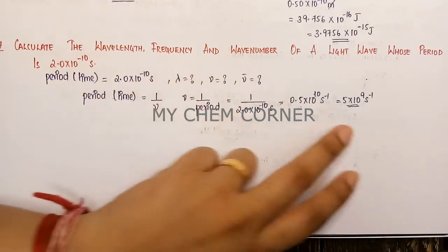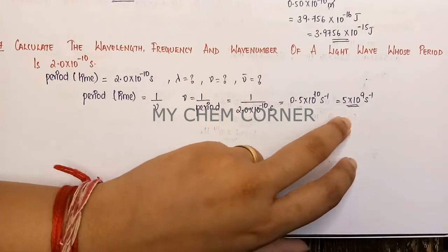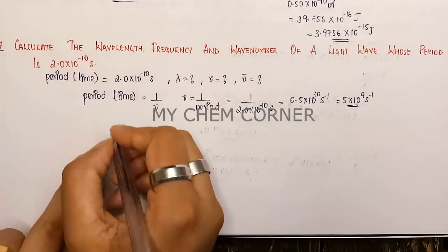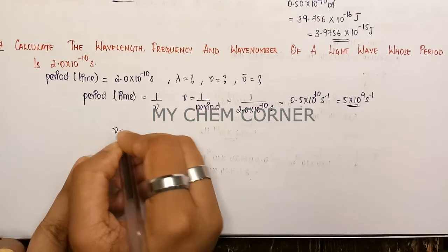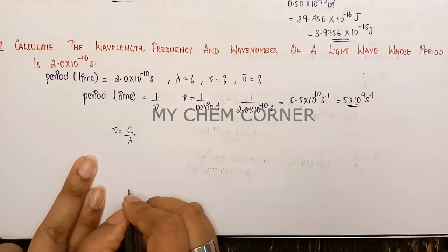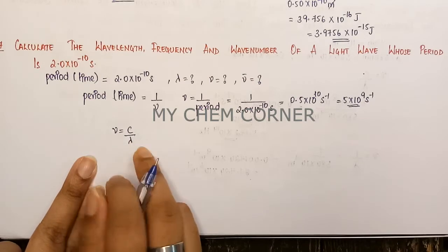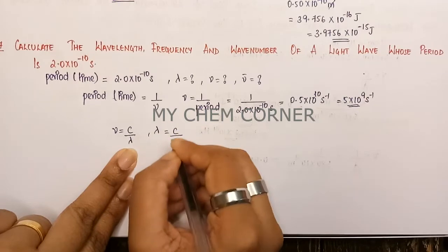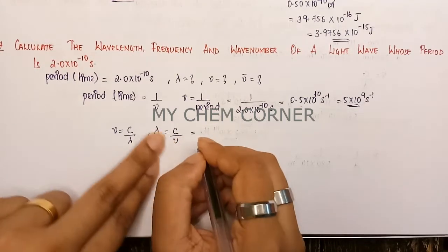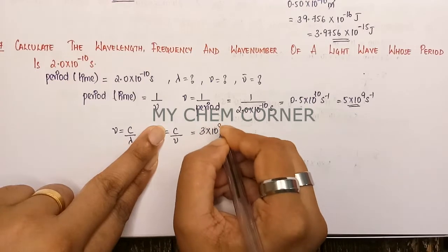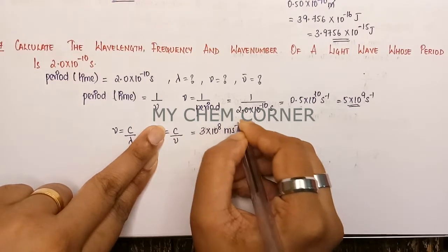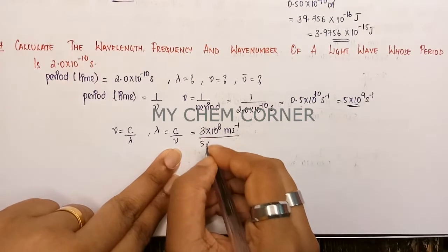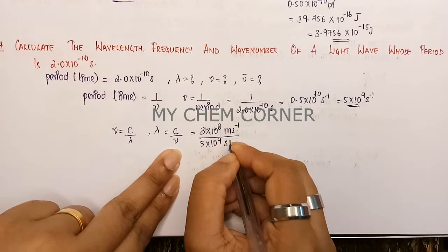Now that we have the frequency, it is easy to calculate the wavelength. We know the relation: frequency = c / λ, so λ = c / frequency. Here c is the velocity of light, 3 × 10⁸ m/s, divided by the frequency we just found, which is 5 × 10⁹ seconds⁻¹.